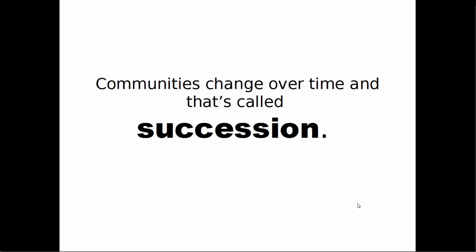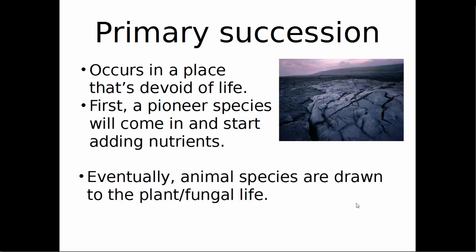Communities change over time, and that's called succession. Primary succession occurs in a place that is devoid of life — for example, a lava flow with nothing living on it. The first thing that happens is a pioneer species, almost always a plant, comes in and starts to survive and add nutrients to the area. Eventually fungus, insects, and small animals come and are able to support their populations because there are enough nutrients. This happens over a very long period of time.